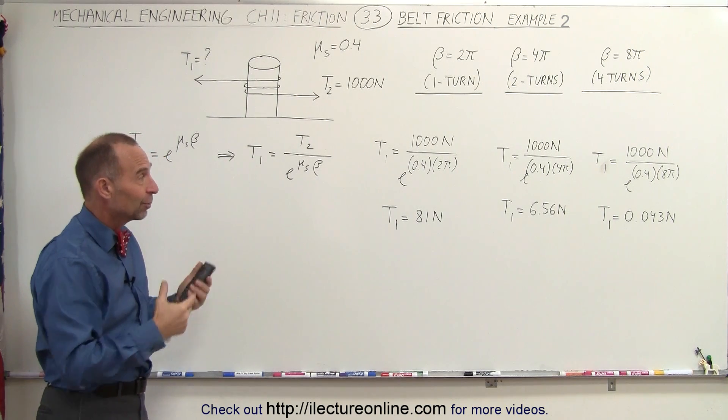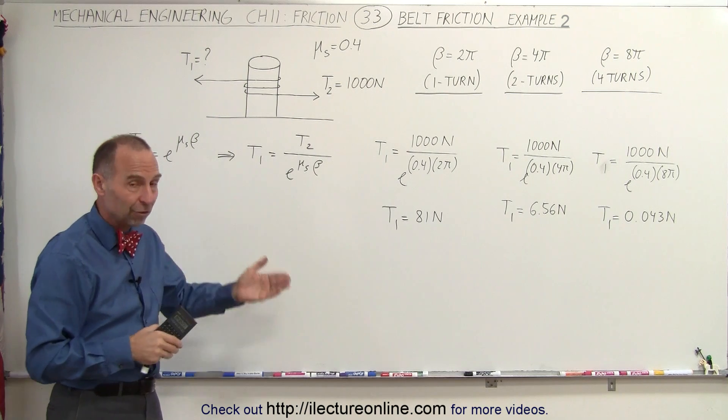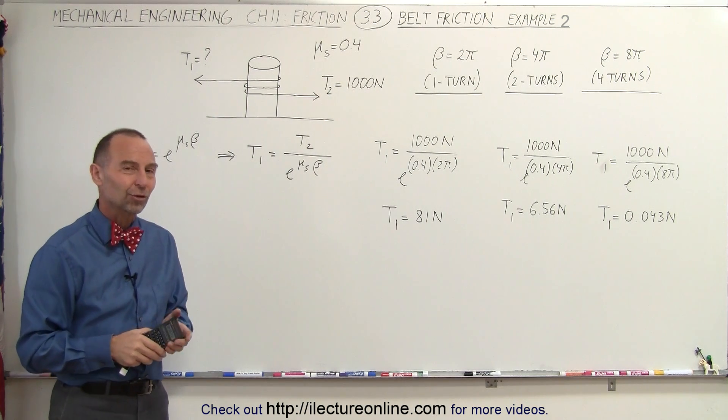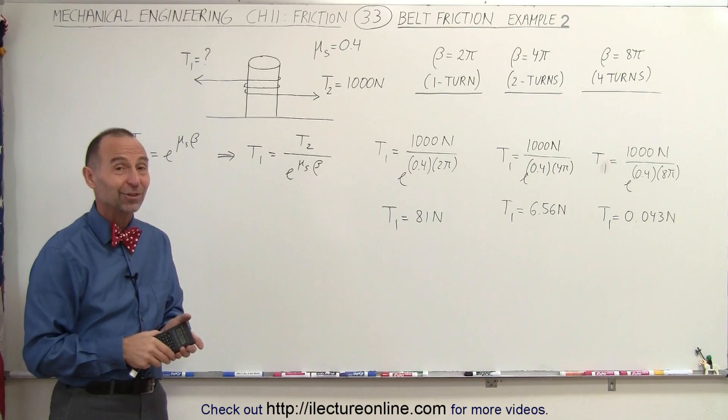And that's how you can see the relationship between the tension, the coefficient of friction, and the number of turns in the rope. And that's how it's done.